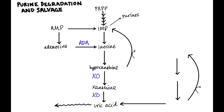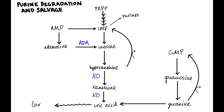What about GMP? GMP ultimately also goes to uric acid. GMP gets converted to guanosine through an enzyme you don't need to know, and guanosine then gets converted to guanine, which ultimately goes back to uric acid. Uric acid then goes out through the urine.